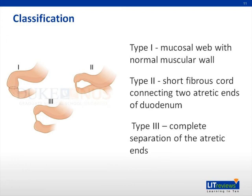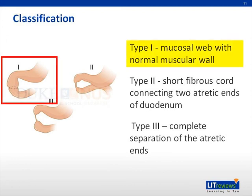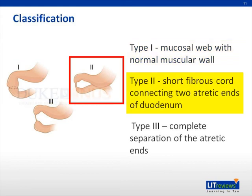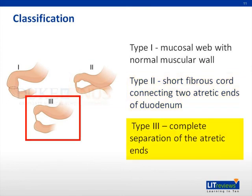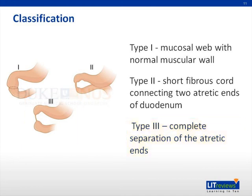Atresias of the duodenum have several basic morphologies. Type 1 atresias are most common and constitute luminal webs or membranes, some of which contain a central defect or fenestration of variable size, resulting in a marked size discrepancy with mural continuity. Type 2 atresias have dilated proximal and diminutive distal segments connected by a fibrous cord. Type 3 atresias are characterized by complete discontinuity between the segments. Most series document a predominance of post-ampullary obstructions. Obstructions caused by type 1 membranes are frequently associated with anomalies of the common bile duct, which may terminate within the membrane itself.